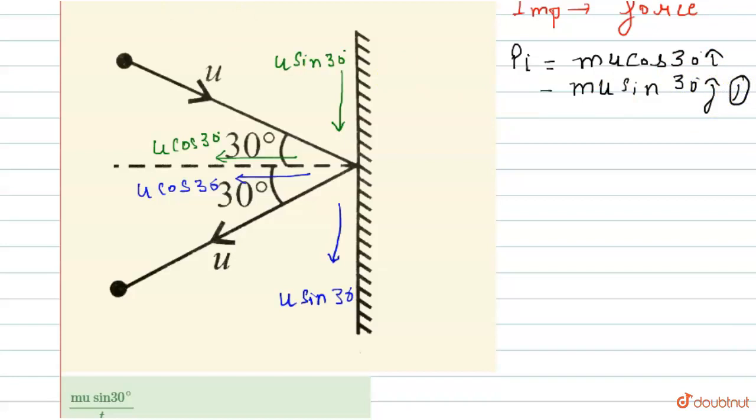Now this is initial momentum. Now we'll find the final momentum. Final momentum is equals to minus m u cos 30 degree i cap